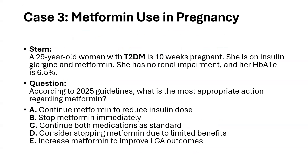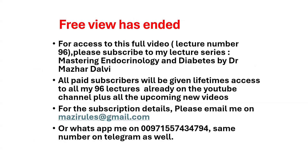Case 3: A 29-year-old woman with type 2 diabetes is 10 weeks pregnant on insulin glargine and metformin. She has no renal impairment and her HbA1c is 6.5% at baseline in the first trimester. According to the 2025 guidelines, what is the most appropriate action regarding metformin? Options include: continue metformin to reduce insulin dose; stop metformin; continue both medications as standard; consider stopping metformin due to limited benefits; or increase metformin to improve small-for-gestational-age outcomes. The correct answer is in the full lecture.